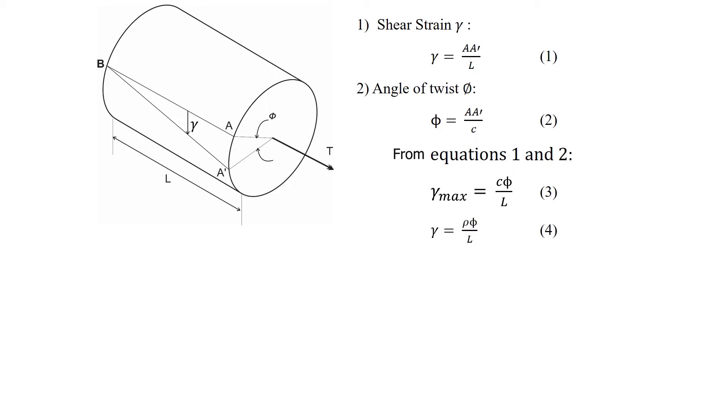For the points within the shaft, we can rewrite equation three as gamma equals rho times phi over the length, where rho is radial distance from the centroid of the shaft.